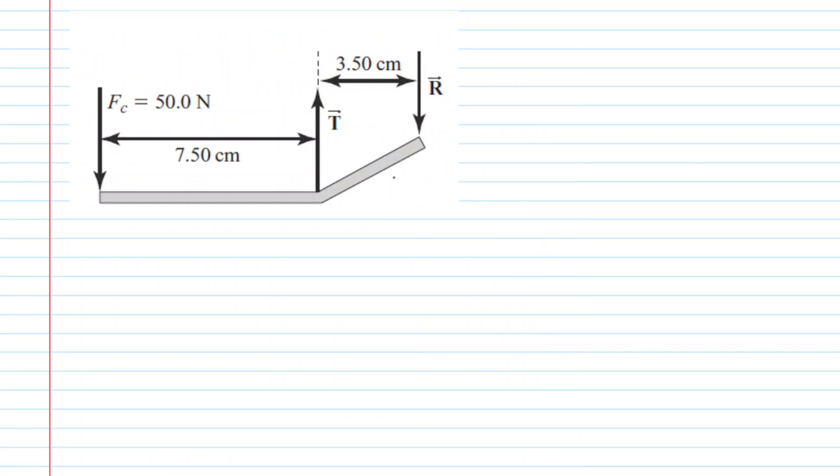So here is that free body diagram, and our objective in the question is to solve for the force that's labeled T and also the force that's labeled R. And we can begin to solve for those forces by applying the following simple equation. We know that because the lower jawbone is in equilibrium, that the sum of the torques acting on the jawbone is going to equal zero.